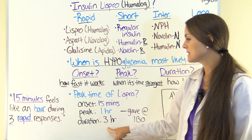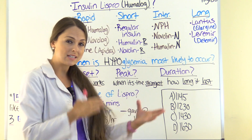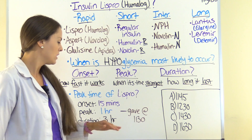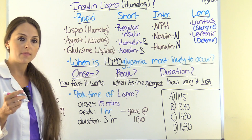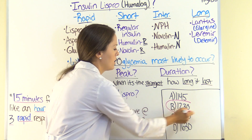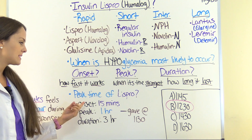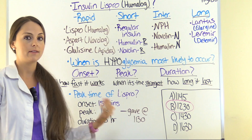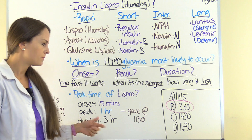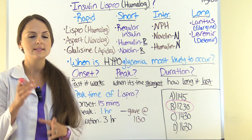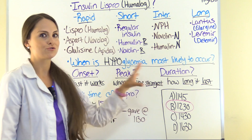So thinking back to our question: what time did we give this insulin? We gave it at 1130. Our peak is in one hour, so they're most at risk for hypoglycemia one hour from that, which would be 1230. These questions like to trick you — the onset (fifteen minutes from 1130) would be 1145, and the duration (three hours) would be 1430. Always make sure you have these organized in your mind so you know what the question is asking and it doesn't trick you.